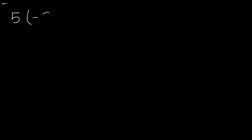Now let's do another problem. We have 5 times negative 3. As you can see, 5 is a positive number and 3 is a negative number. Going back to our second rule, when you are multiplying two integers with different signs, you are going to get a negative answer. So 5 times 3 is going to give us 15, and the answer to 5 times negative 3 is negative 15.